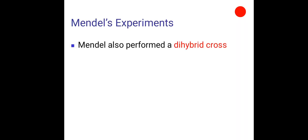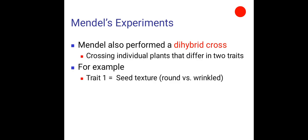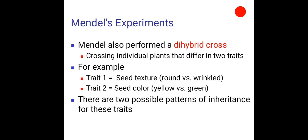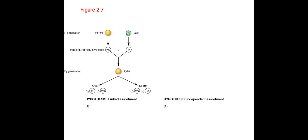Mendel also performed a dihybrid cross, that is crossing individual plants that differ in two traits. For example, trait 1 that is seed texture, round versus wrinkled, and trait 2 that is seed color, yellow versus green. These are the two possible patterns of inheritance of these traits. The first one is linked assortment and the second one is independent assortment. First we will discuss linked assortment in which the parental generation is yellow round seed and the other parent is green wrinkled seeds. They produce haploid reproductive cells giving rise to the F1 generation that is hybrid yellow and round seeds.